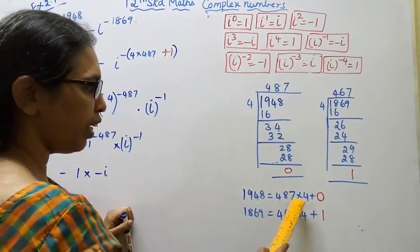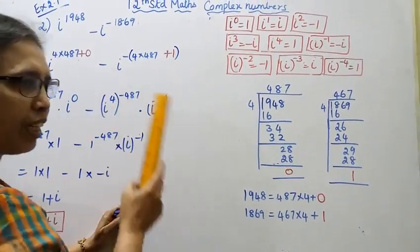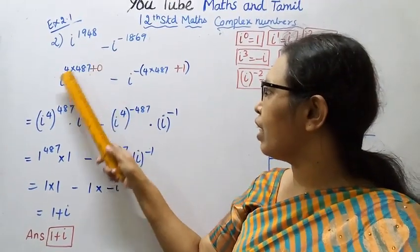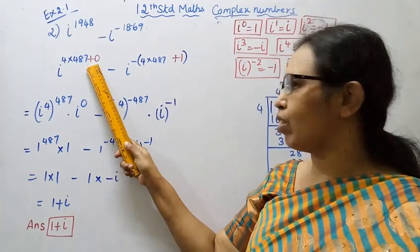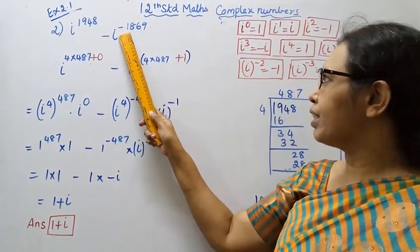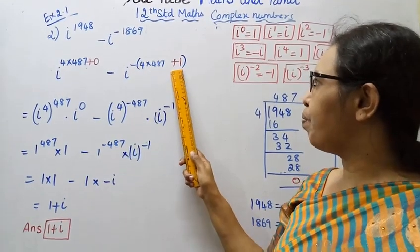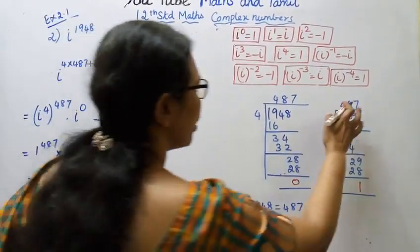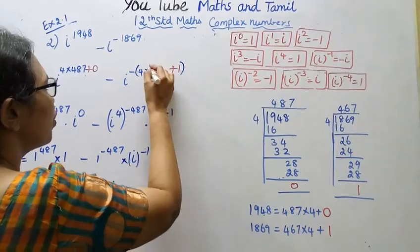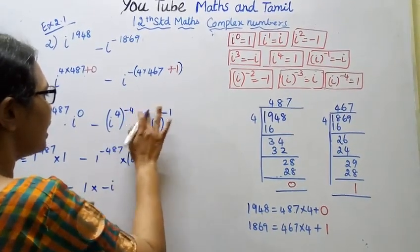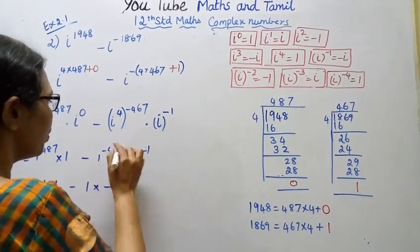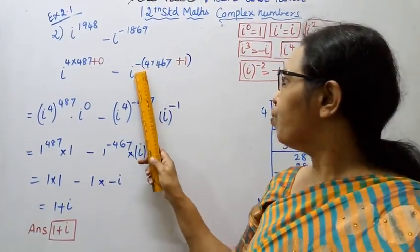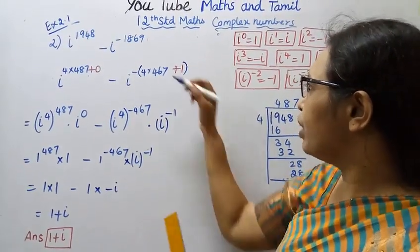Now rewriting the expression: i power (4 × 487 + 0) minus i power minus (4 × 467 + 1). This allows us to apply the rule i^4 = 1 to simplify each term separately using the quotient and remainder values.